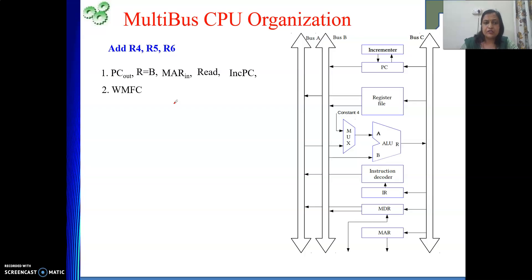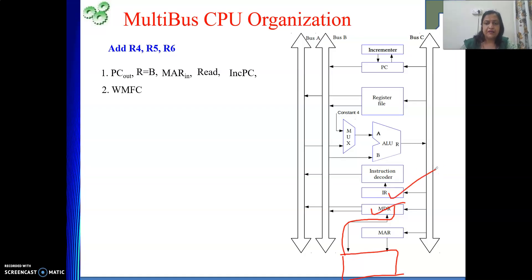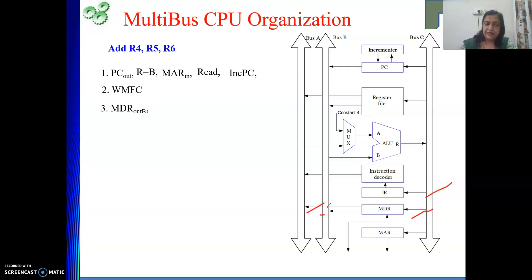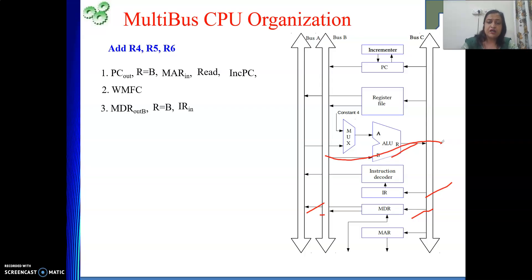After your WMFC is over — meaning your waiting is over — the instruction will come from memory into MDR, because we know the connection is there only. Now from MDR, I need to redirect it into IR; then only decoding will be done. In the diagram, MDR can place its content on bus A and B, and new values enter via bus C. Into IR, the value will come via bus C only. So we write: MDR out B — data is placed on bus B. Then R equal to B — placing that content on bus C. Then IR in. Once IR in is written, the instruction is decoded and we understand we need to perform an addition operation. All operands are in registers only.